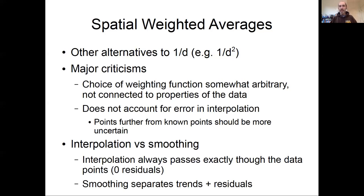An interpolator is going to pass through the data exactly at the data point. If I'm interpolating between points, when I get to a point, the interpolation goes to that point. While a smoother—if I fit a polynomial to some data—it's not going to go through every point in the data, it's going to leave some residual error between the model and the data. So a true interpolator has zero residuals, while smoothing separates the trend in the residuals.